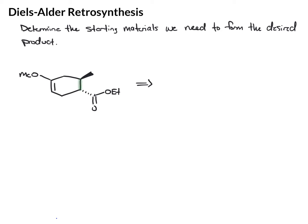So your dienophile would come from these two carbons, your diene from these four carbons, and if we're thinking backwards and breaking this apart, we're going to break these bonds. Here is a retrosynthesis arrow, which again just tells us we're going backwards. And if we break this apart, we can draw our diene and then our dienophile.